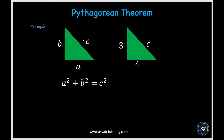In this section, we'll learn how to find the missing side of a right triangle using the Pythagorean theorem. The Pythagorean theorem states that if two sides of a right triangle are given, you can find the third using the formula: a squared plus b squared equals c squared. Here we have sides a and b, and c is missing.